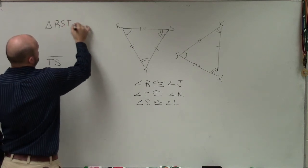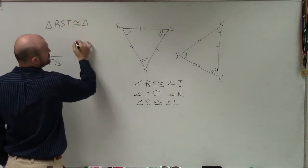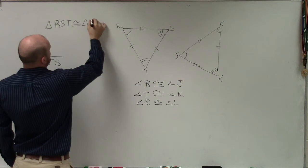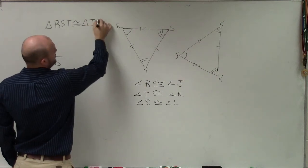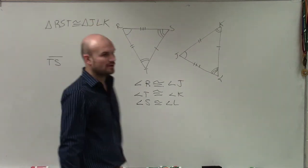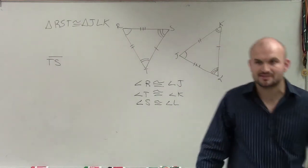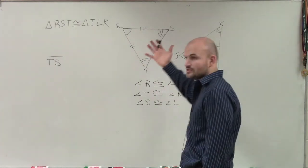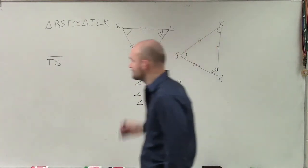Triangle RST is congruent to triangle JLK. Sorry, that's kind of important for us to be able to determine our corresponding parts, because not only are they corresponding, but they're also congruent in their sides. Forgot to write that.